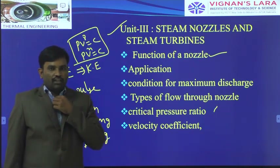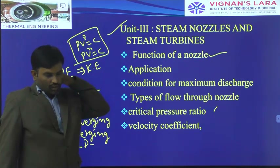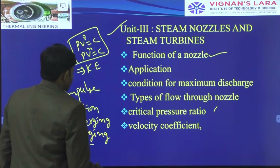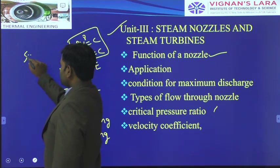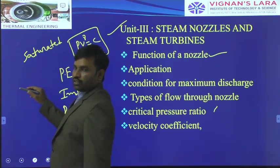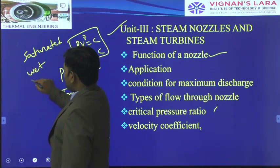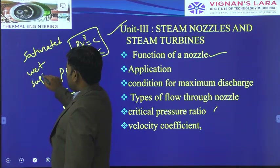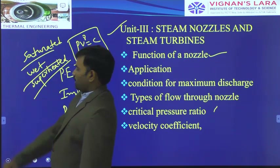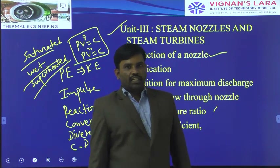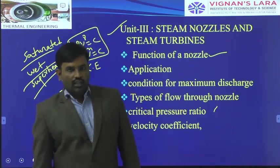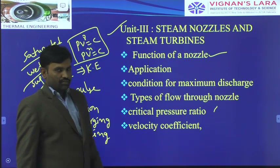Generally we develop three different types of steam: dry saturated steam, wet steam, and superheated steam. These three different types of steam are introduced into the nozzle, and from the nozzle we get different velocities of steam.